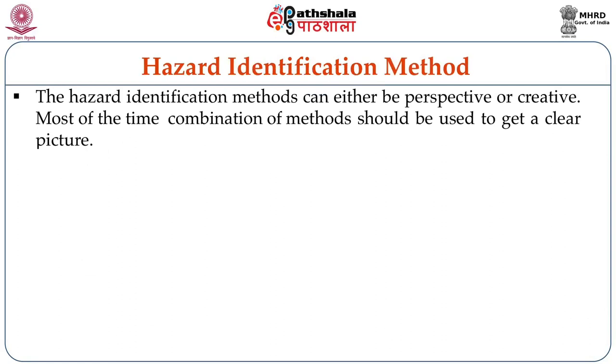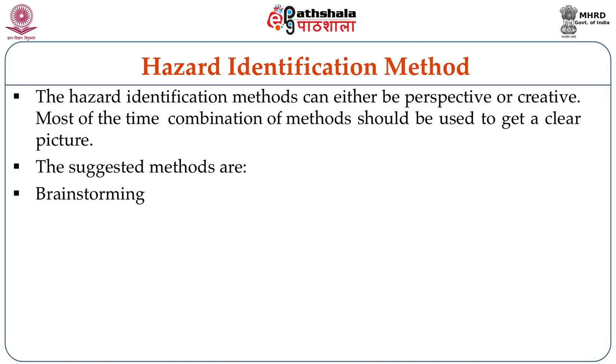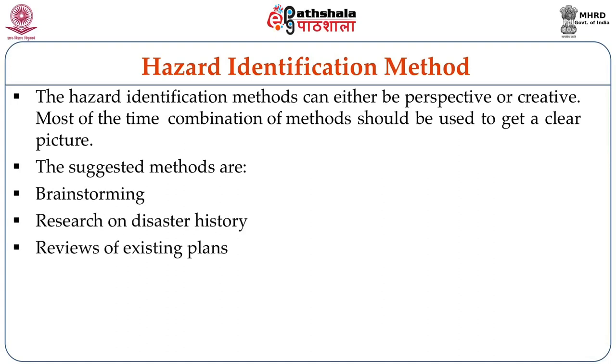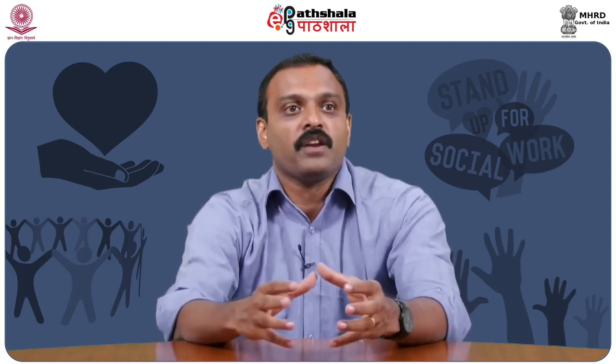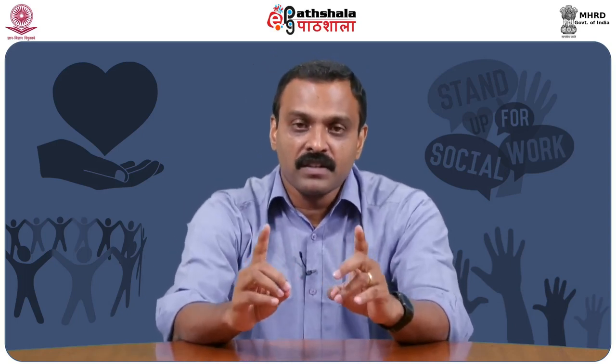Hazard identification methods can be either prospective or creative, and most of the time a combination of methods should be used to get a clear picture. Suggestions include brainstorming, researching disaster history, and reviewing existing plans. For example, in many Indian states it is mandatory to prepare disaster management plans at district level — you should read one and see what discussed elements are incorporated and what has not been included. Now let us go into the concept of vulnerability. Earlier we saw that risk is a function of hazard, vulnerability and exposure. We have covered substantially the hazard part — classification, magnitude — and now comes vulnerability.